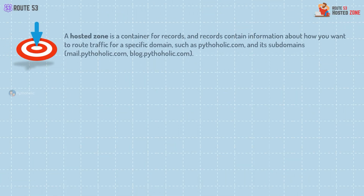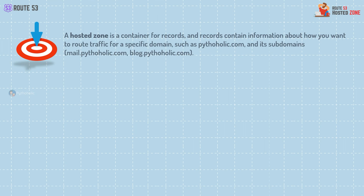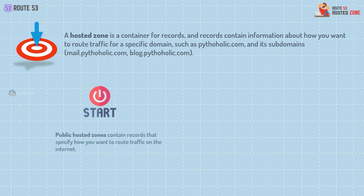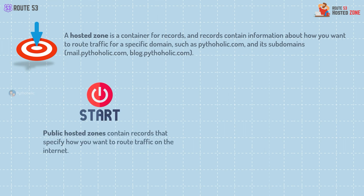There are two types of hosted zones. The first is the public hosted zone. A public hosted zone is a type of hosted zone in Route 53 that is publicly accessible on the internet.